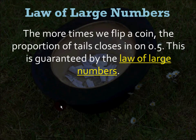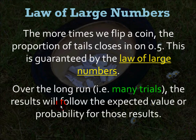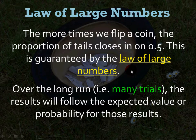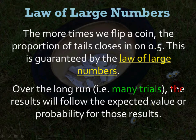This leads us to the law of large numbers, which we'll talk about more in the second semester. The more times we flip a coin, the proportion of tails closes in on 0.5, which is the probability of getting tails. Over the long run — many, many trials — the results will follow the expected probability. If you flip it 10 times you might get 8 heads, but flip it 100 times and you'll be closer to 50. Flip it 1,000 times and you'll get even closer to 0.5.